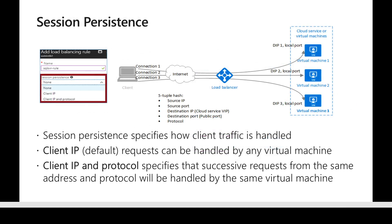There are session persistence options you can choose. By default there is none, but you can define either client IP or a client IP and protocol combination. If you choose client IP, requests from that particular client IP will always go to the same machine. If you choose client IP and protocol, for example UDP traffic from a specific client IP will always go to the same backend machine. In general, Azure load balancer follows a five-tuple hash — a combination of source IP, source port, destination IP, destination port, and protocol — and if any of these values change, it may route to a different instance.